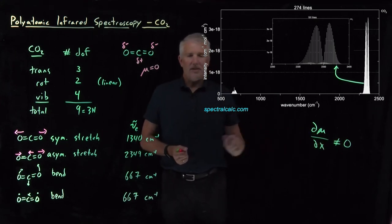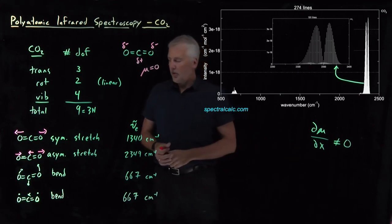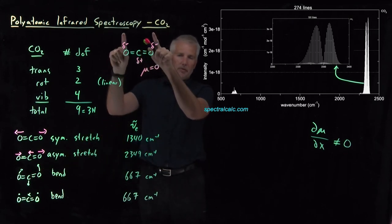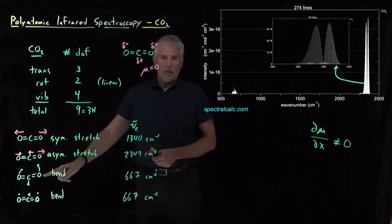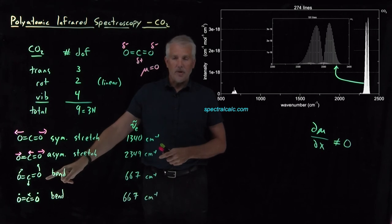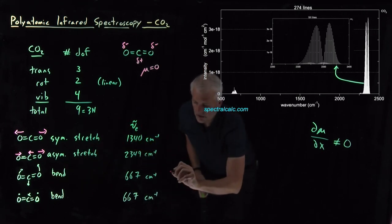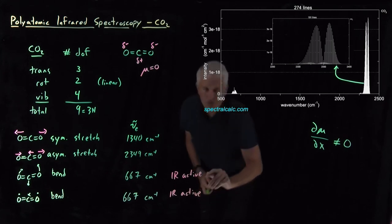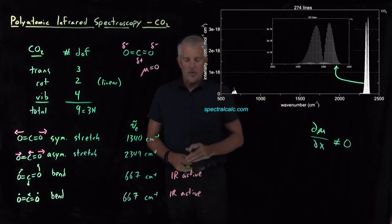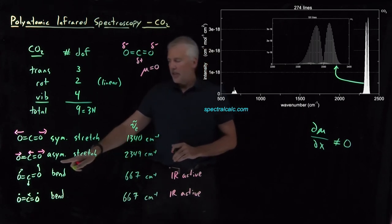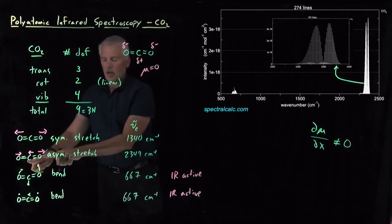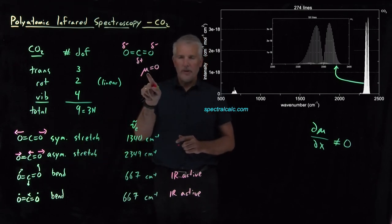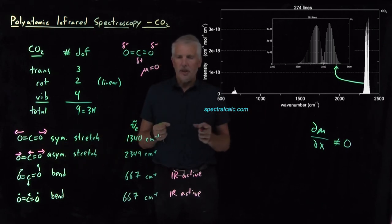For several of the motions, like the bending motion, if I take these two negative charges and move them upward while moving the carbon downward, that develops a dipole moment. The dipole moment changes from zero to some non-zero value as the molecule bends. So these two bending motions are infrared active, which is why we see absorption at 667 wave numbers. Likewise, for the asymmetric stretch, if one CO bond is getting longer while the other is getting shorter, the two bond dipoles don't cancel each other anymore, and the molecule develops a dipole moment as the bond lengths change. So this vibrational mode is also infrared active.